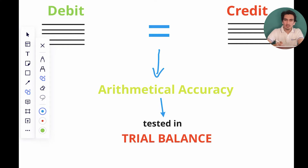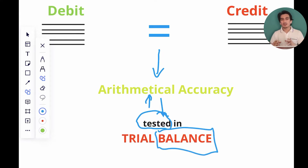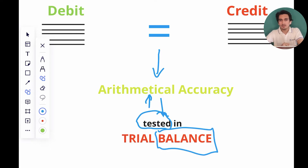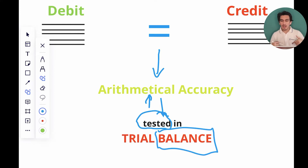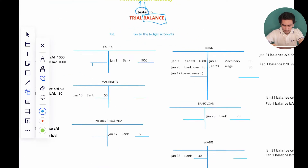To test for this arithmetical accuracy we create the trial balance. The trial balance is made up of two words: trial and balance. 'Trial' represents that we will be testing for arithmetical accuracy, and 'balance' refers to the fact that we will be using all the balances from ledger accounts to check for arithmetical accuracy. This means we'll first need to extract our balances from the ledger accounts.